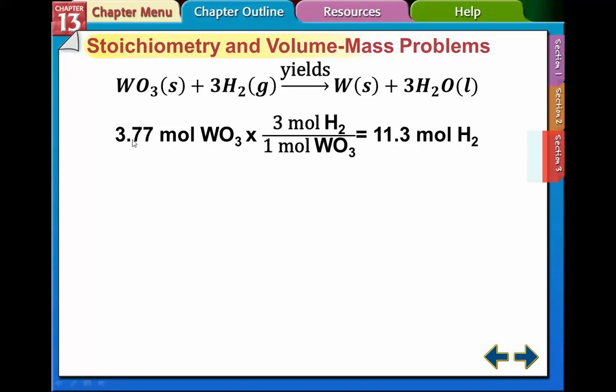So I set that up. I have this many moles from my previous calculation, the 3 moles of hydrogen to react with that with the tungsten oxide. So in my problem here, I would need 11.3 moles of hydrogen gas.